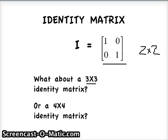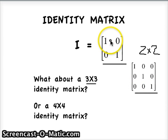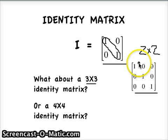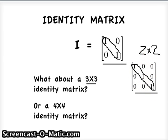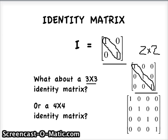What if we have a three by three? We know that we can only multiply certain matrices by each other. We cannot multiply the two by two identity matrix times a three by three. But that's okay because a three by three has its own identity matrix. You see a common theme forming where there's a diagonal of ones surrounded by zeros. Maybe you can take a guess at what the four by four identity matrix looks like — if you drew something like this, you would be right.